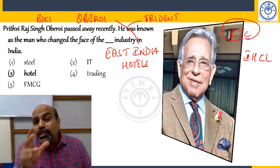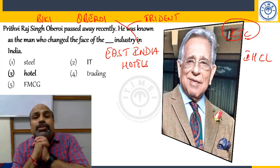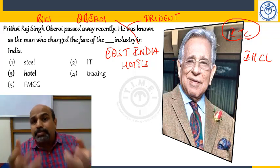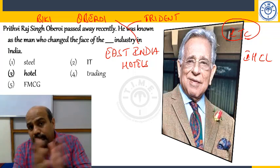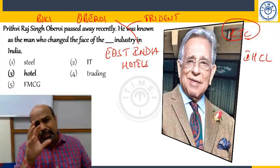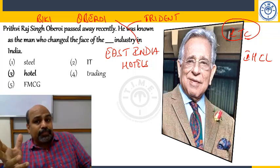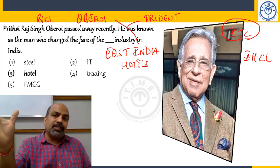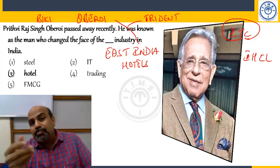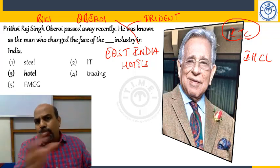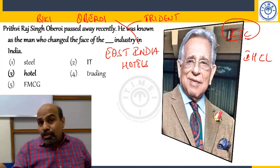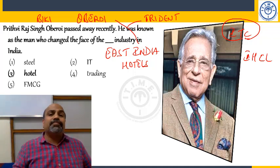FMCG stands for Fast Moving Consumer Goods — final products that you and I buy, like toothpaste, biscuits, chocolates, cigarettes, and cold drinks. Most everyday items in a department store are FMCG. Because they have high demand, they keep moving off the shelf very fast. FMCG companies include Nestle, Hindustan Unilever, P&G, Godrej, and ITC.